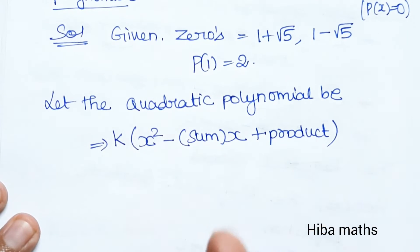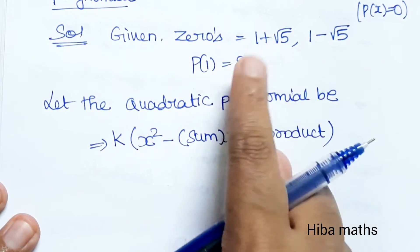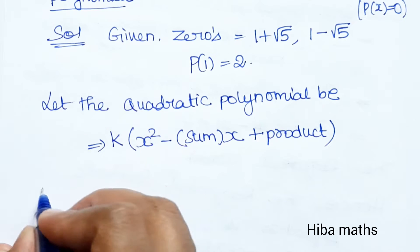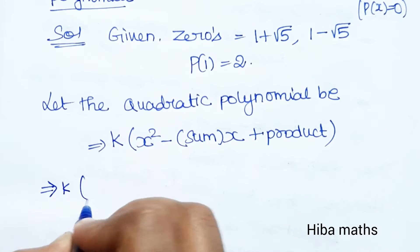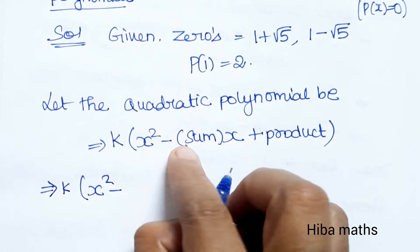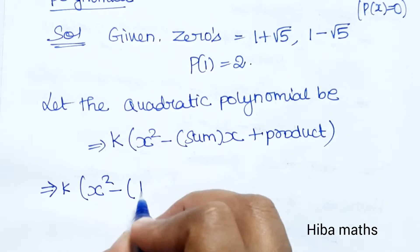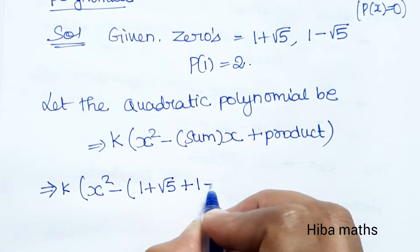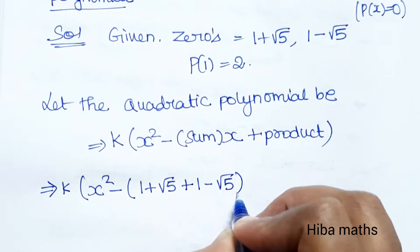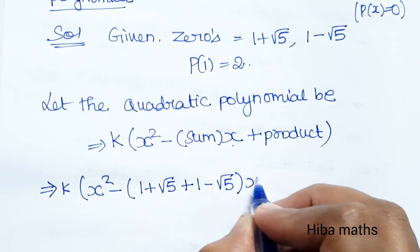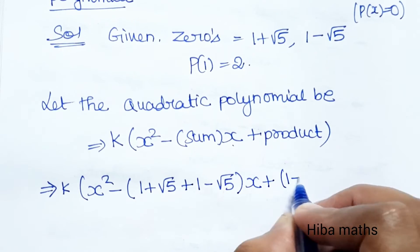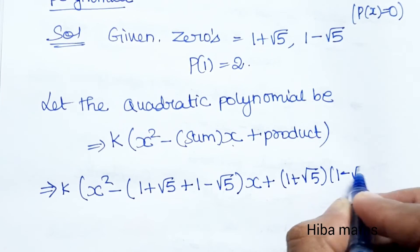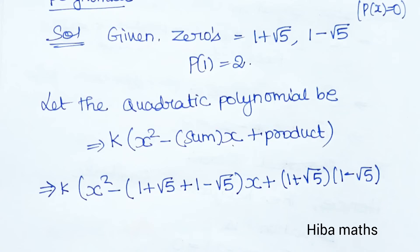We substitute the 2 roots. Here, the sum of roots is (1 plus root 5) plus (1 minus root 5), and we write k times x squared minus sum of roots times x plus product. Sum: 1 plus root 5 plus 1 minus root 5.